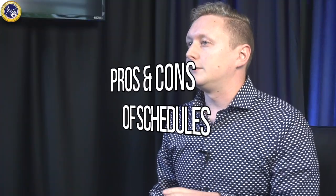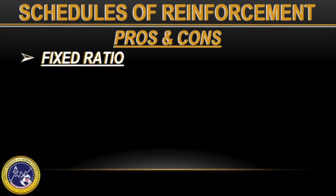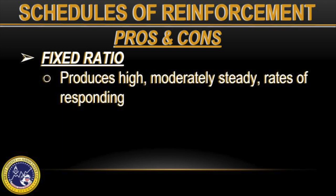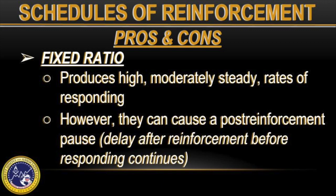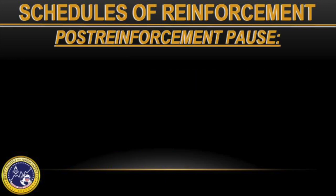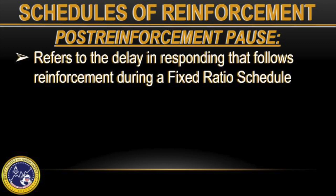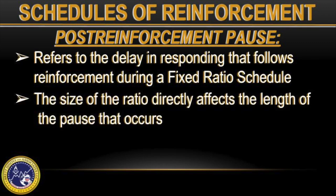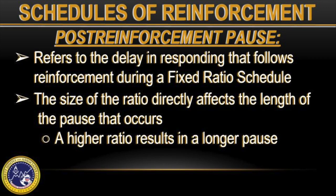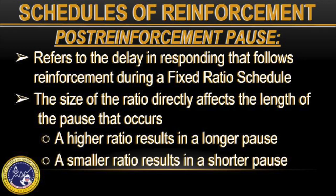Now that we've talked about what each of these terms means, let's look at the pros and cons of each approach. Fixed ratio schedules are great at building up fast rates of responding with moderately steady results. The problem with a fixed ratio is that we run into something called post-reinforcement pause — a delay in responding that follows reinforcement during a fixed ratio schedule. The size of that ratio directly affects the length of the pause: a higher ratio results in a longer pause, and a smaller ratio results in a shorter pause.